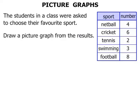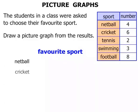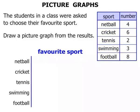Now we need to draw a picture graph from the results. The title of the graph is 'Favorite Sport.' We write down the various sports: Netball, Cricket, Tennis, Swimming, and Football. And we draw a line to separate the labels from the data.